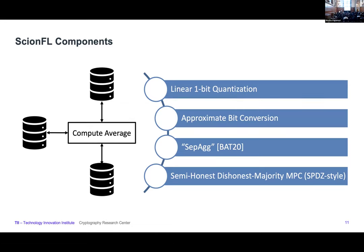We support linear one-bit quantization schemes. By linear, we mean that there is some algorithm applied to each local model to quantize it such that if you aggregate the quantized local models, it is equivalent to the non-quantized version of the aggregated model. We have an approximate bit conversion method. Since we consider one-bit quantization, the model is converted to an array of bitstreams and some values. Each bit is communicated to the three servers. We have a mechanism to convert these bits, shared as boolean shares, into equivalent arithmetic shares required for aggregation. We use a technique called separate aggregation from the BAT20 paper to further optimize communication cost.